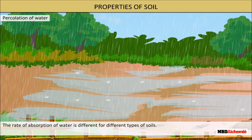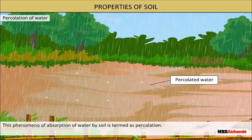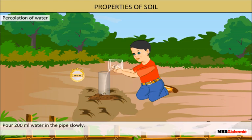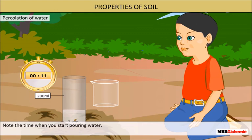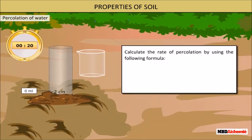The rate of absorption of water is different in different types of soils. This phenomenon of absorption of water by soil is termed as percolation. Let us do an activity. Take a hollow pipe having a diameter of 5 cm. Place the pipe about 2 cm deep in the ground. Pour 200 ml of water in the pipe slowly. Note the time when you start pouring water. When all the water has percolated, leaving the pipe empty, note the time again. Be careful not to let the water spill over or run down on the outside of the pipe while pouring. Calculate the rate of percolation by using the following formula.